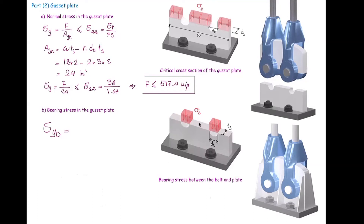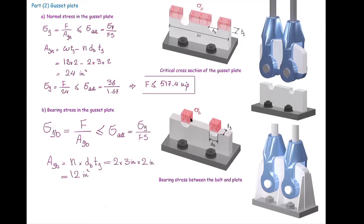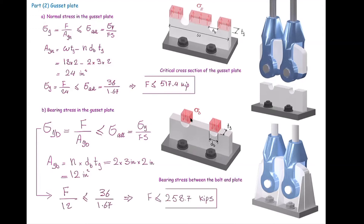The bearing stress in the gusset plate, σ_gb, equals force divided by area and must be smaller than the allowable stress (yield stress / factor of safety). The projected rectangle has thickness t_g and width d_b, and because there are two bolts the total area is 2 × d_b × t_g. Plugging in the values, we calculate the area and substitute into the design equation to solve for the force that would cause failure in the contact area between the bolt and the plate.